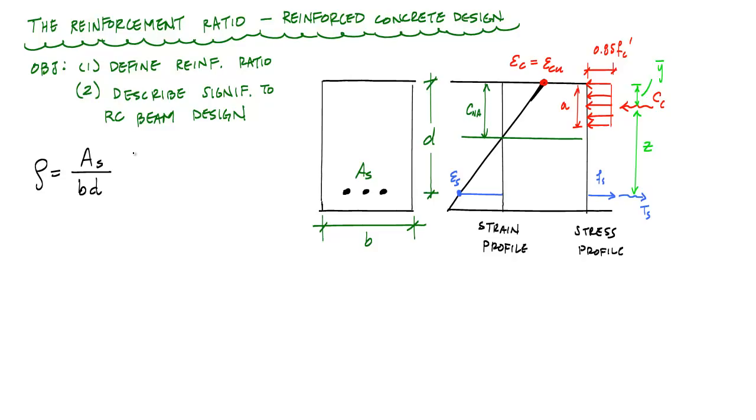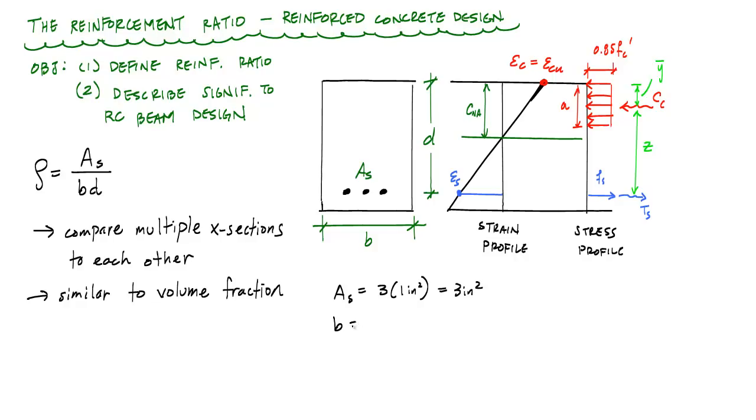For example, if I had a cross section with three number nine bars, so As was 3 times 1 inch squared, that would be 3 inches squared. If the width were 12 inches and the depth were 24 inches, my reinforcement ratio would be 3 inches squared divided by 12 inches times 24 inches, which equals 0.0104. A lot of times this is expressed as a percentage, which is about 1 percent. It's pretty easy to calculate.